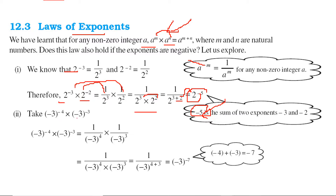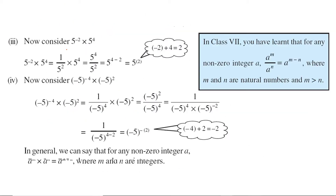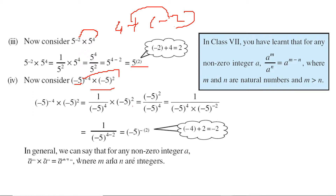For example, minus 3 to the power minus 3 multiplied by minus 3 to the power minus 4 — bases are same, so we just add: minus 3 plus minus 4, giving minus 3 to the power minus 7. Again, 5 to the power minus 2 times 5 to the power 4: 4 plus minus 2 is 4 minus 2 equals 2, so 5 to the power 2. There are various methods to solve these.